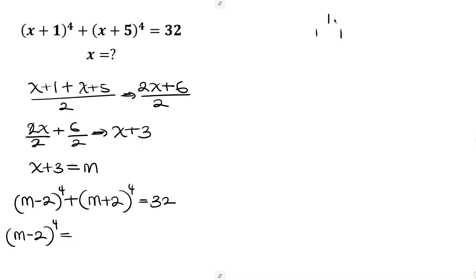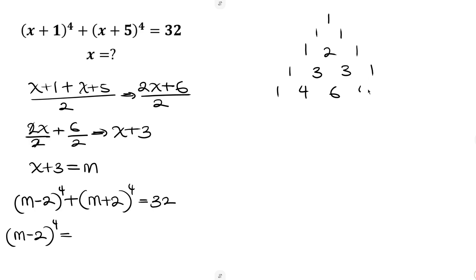Pascal's triangle looks like this: start with 1, 1 1, then 1 2 1, then 1 3 3 1. And lastly, start with 1, then 1 plus 3 is 4, 3 plus 3 is 6, 3 plus 1 is 4, and end with 1. So for power of 4, the coefficients from Pascal's triangle are 1, 4, 6, 4, 1.